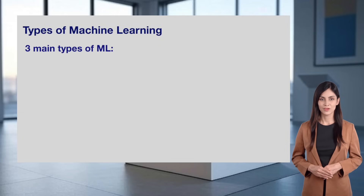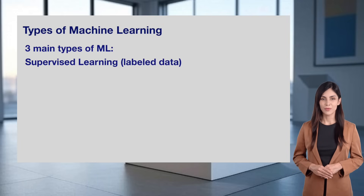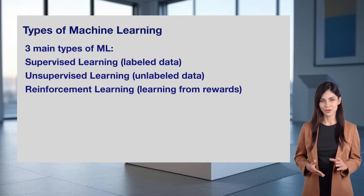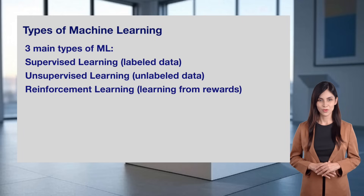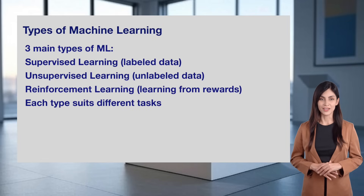Machine learning comes in three main types, each suited for different tasks. First, supervised learning uses labeled data, like teaching a child with examples. Second, unsupervised learning works with unlabeled data, finding patterns on its own. Third, reinforcement learning learns through rewards, like training a dog with treats. We'll dive deeper into these types in future lessons, but for now, know that they're the building blocks of machine learning, helping AI systems learn in different ways.